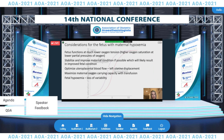One of the most challenging aspects of critical illness in pregnancy is the management of two patients, and one cannot forget about the oxygenation of the fetus. Fetal oxygenation depends on placental blood flow, differences in partial pressure of oxygen between the mother and the fetus, oxygen content, and placental surface area. The priority is always maternal stabilization, as opposed to delivery of the compromised fetus, as stabilization of the mother often leads to improvement in fetal condition.